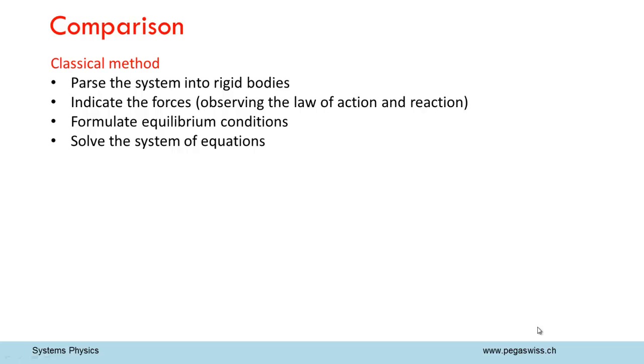Now, let's compare the two methods. In the classical method, the whole system must be parsed into rigid bodies. Then, all the forces and angular momentums acting on each body must be indicated while making sure that the law of action and reaction is fulfilled in each case. Then, the three equilibrium conditions are formulated for each body. In the end, the whole system of equations is solved for the unknown quantities.